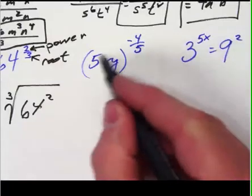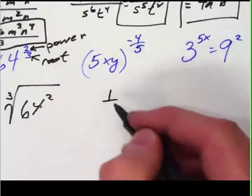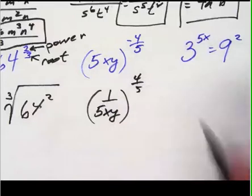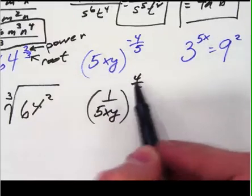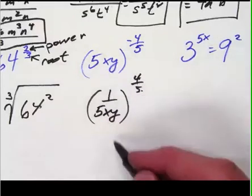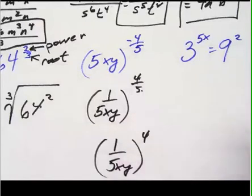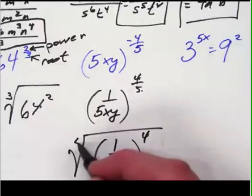This one here is a negative exponent so that flips everything that it's taking the exponent of. So that would be that flipped and now we have the four fifths power. So one over that does the flipping takes care of the negative and now I've got the power and the root. So here is my power fourth and here is my root fifth.